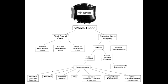What blood product would you provide to stop significant bleeding due to thrombocytopenia or qualitative platelet defects? You would give platelets. The effect of giving platelets would be to increase the platelet count by about 5,000 platelets per cubic meter.